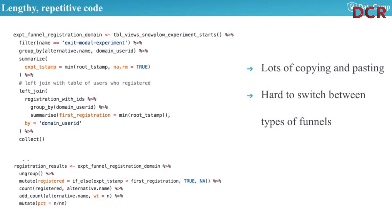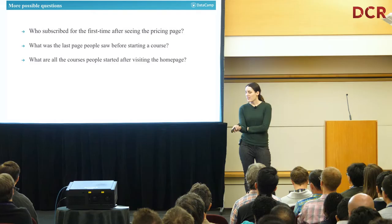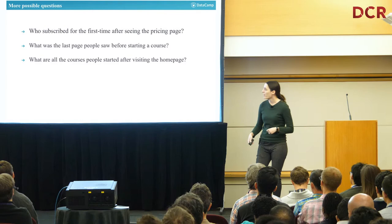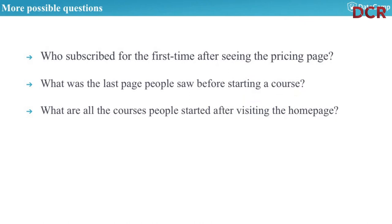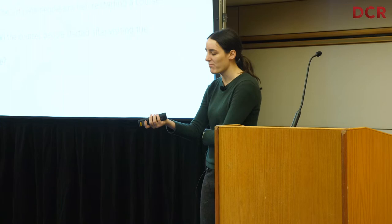The solution: there are even more possible questions, like 'who subscribed for the first time after seeing the pricing page' — making sure they've never subscribed before — or 'what was the last page people saw before starting the course,' or 'what are all the courses people started after visiting the homepage.' A bunch of different if-this-then-that questions involving inner joins, left joins, percentages, etc.